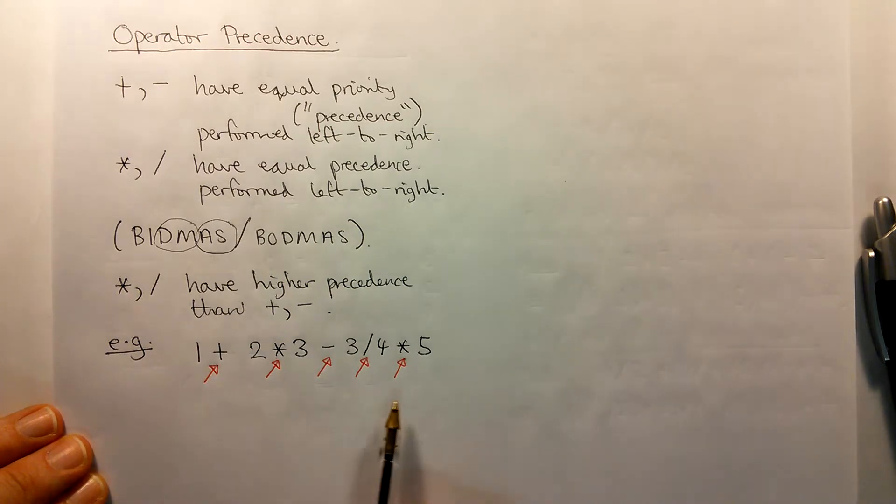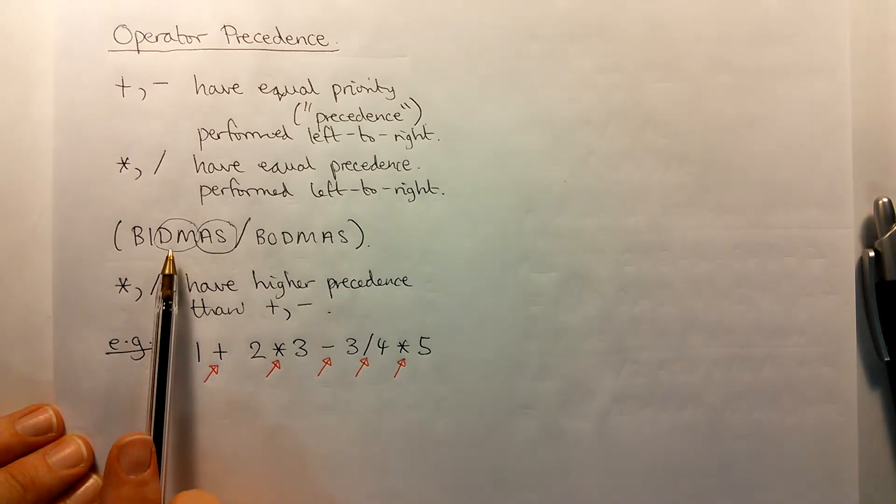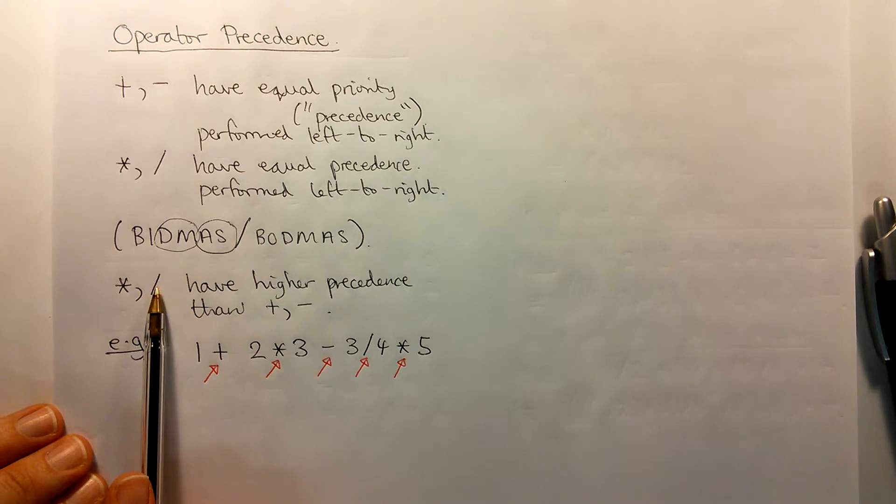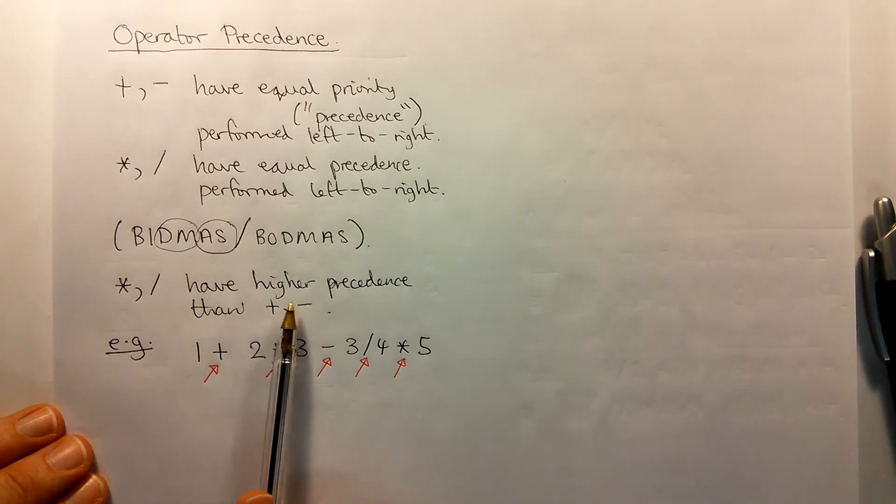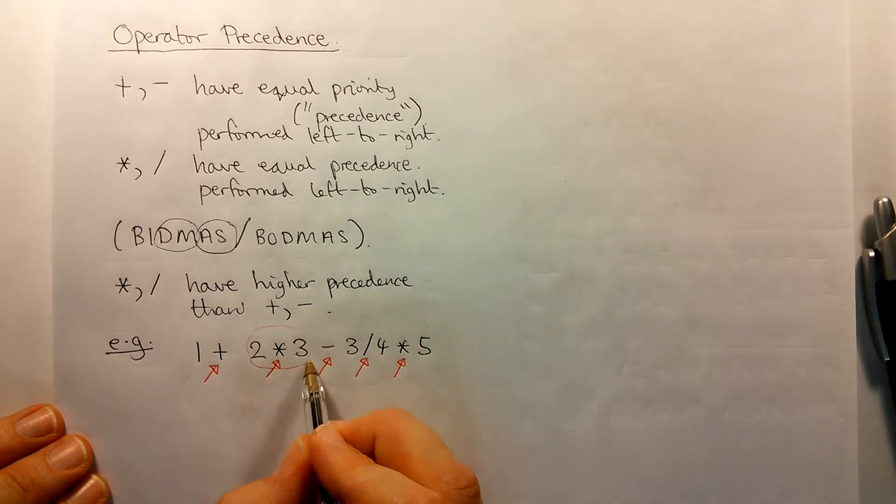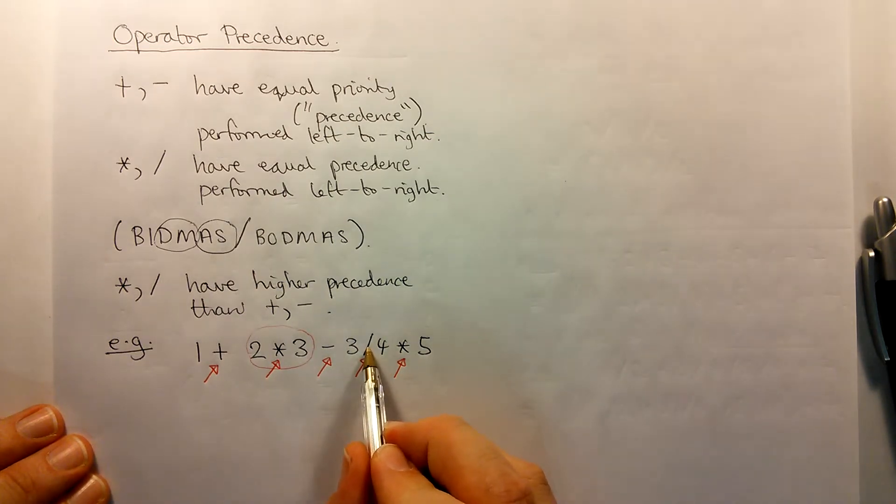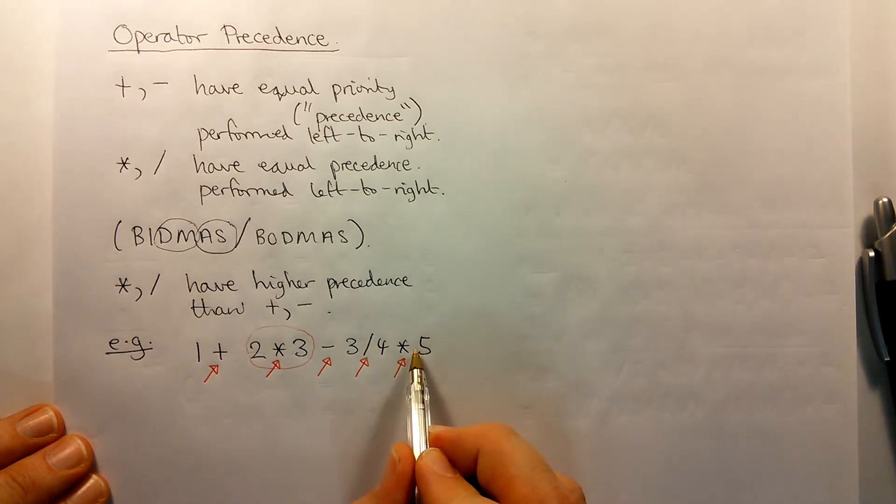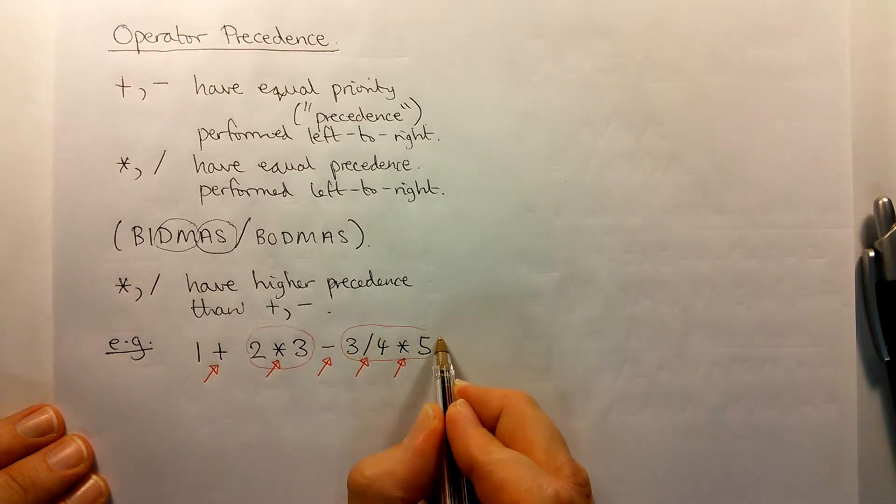Now, because this expression has a mixture of different precedence operators in it, we have to use these rules which say that multiply or divide, which are treated equally, must be performed before add and subtract, which are treated equally. So that means that this multiplication operation would need to be done first. And now here, in this expression, we've got a mixture of multiplies and divides. Remember, they're treated with equal precedence. So within that sub-expression, we would work from left to right.